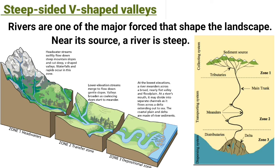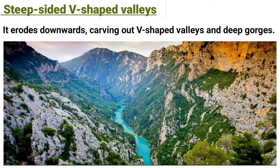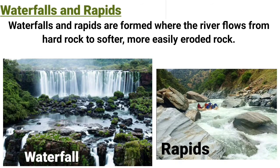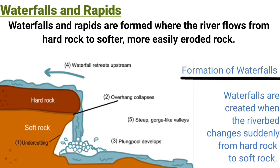Rivers are one of the major forces that shape the landscape. Near its source, a river is steep and it erodes downward, carving out V-shaped valleys and deep gorges. Waterfalls and rapids are formed where the river flows from hard rock to softer, more easily eroded rock.